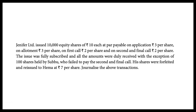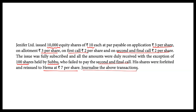What is the problem? Jennifer Limited issued 10,000 equity shares of Rs 10 each at par, payable on application Rs 3 per share, allotment Rs 3 per share, first call Rs 2 per share, and second and final call Rs 2 per share. The issue was fully subscribed and all amounts were duly received, with the exception of 100 shares held by Subbu, who failed to pay the second and final call. His shares were forfeited and re-issued to Hema at Rs 7 per share. Journalize the above transactions.